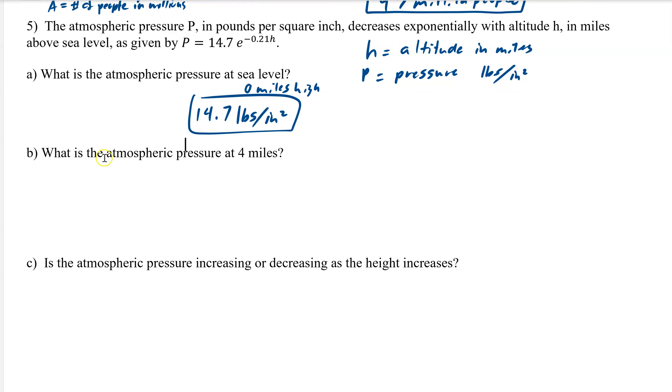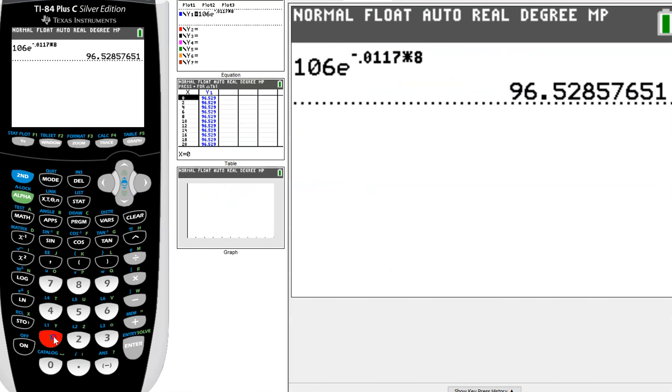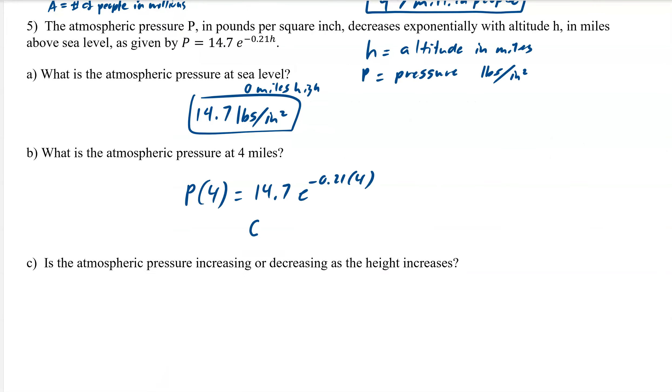Next question is, what is the atmospheric pressure at 4 miles? So now, we would have to plug in 4 into our calculator, and see what it gives us. So we have 14.7, and again, second ln, negative 0.21, so again, it's a decay rate, times 4, hit enter, and we get 6.5, so 6.35 pounds per square inch.